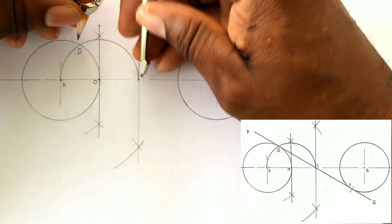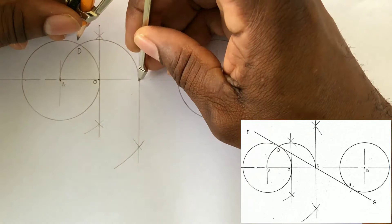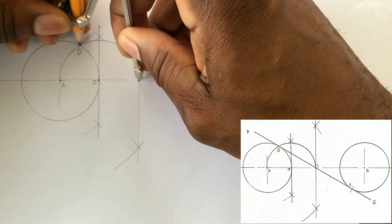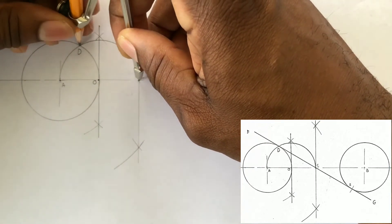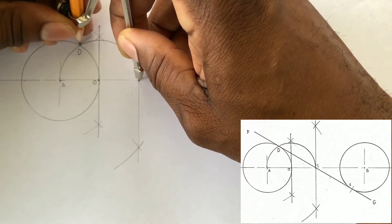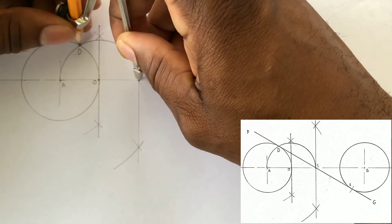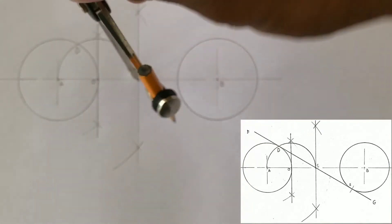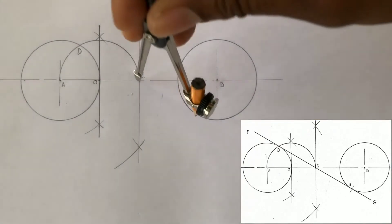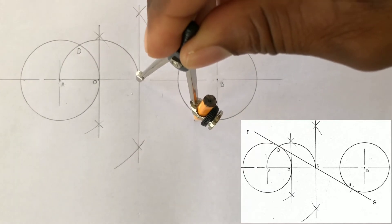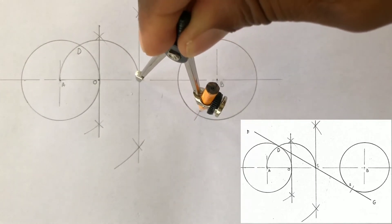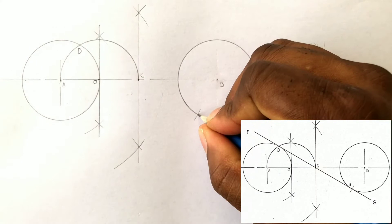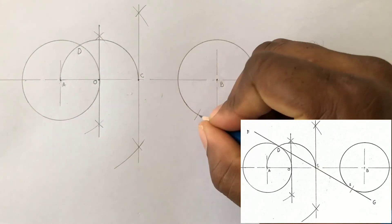Now open your compass from point C to point D, and with your compass center at C, scribe an arc to cut the circle we originally drew at point B. This arc will give us point E.